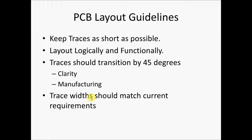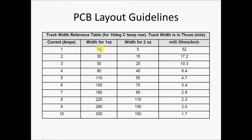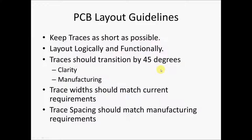Trace widths should match current requirements. Since we have a fixed thickness of copper, when we have a really high current we want a thicker width of copper. For example, if we have 1 amp going through a trace, we want that trace to be at least 10 mils wide for a 1-ounce weight of copper. If it's 2 ounces, it's twice as thick so we can have a smaller trace. When we get to really high currents we need really wide traces. Remember, mils is thousandths of an inch — so even a pretty small trace can carry quite a bit of current on 1-ounce copper.